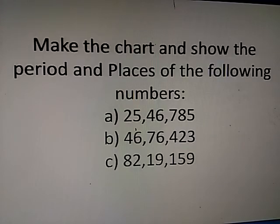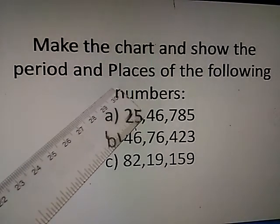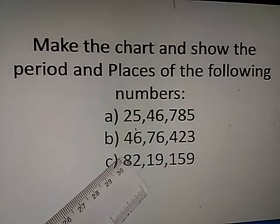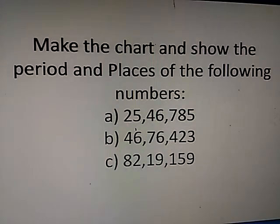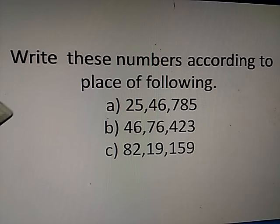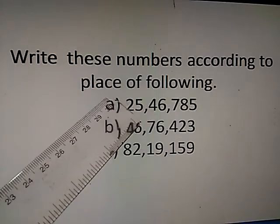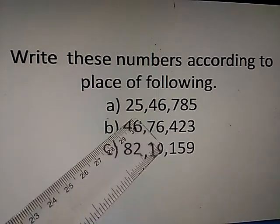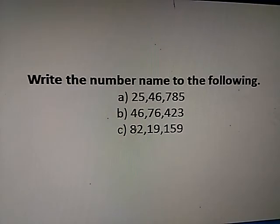Now, homework for you: make the chart and show the period and places of the following numbers. Second question: write these numbers according to the place value of the following. Third question: write the number name for the following. Did you understand? You have to complete the homework.